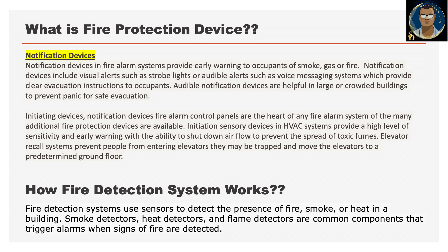Initiating devices, notification devices, and fire alarm control panels are all the heart of any fire alarm system, and many additional fire protection devices are available. Initiation sensory devices in HVAC systems provide a high level of sensitivity and early warning, with the ability to shut down airflow to prevent the spread of toxic fumes. Elevator recall systems prevent people from entering elevators — they may be trapped — and move the elevators to a predetermined ground floor.